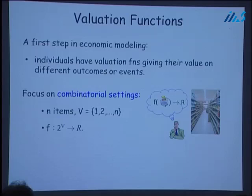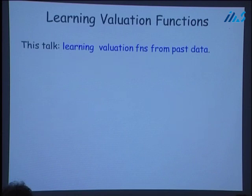The ground set can be, for example, the set of items for sale in a supermarket. The valuation function is over various bundles or subsets of items that the customer might be considering. The specific question I'm going to look at in this talk is: if we don't know the valuation function of a customer, can we learn it from past or observed data?